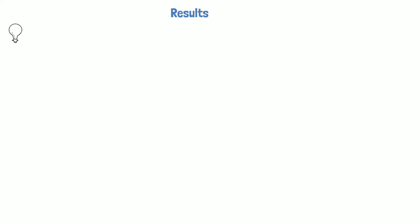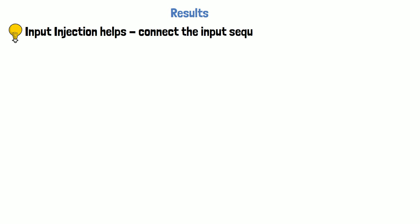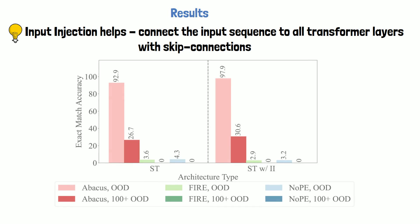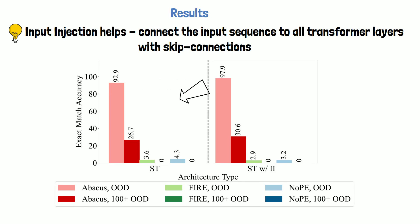Another interesting result from the paper shows that input injection helps. By input injection, the meaning is that the input sequence is injected with skip connections to any layer of the transformer. On the left we can see results for a standard transformer, where the transformer with abacus embeddings is shown in pink and red. Both reported results are out-of-distribution, meaning for larger numbers than those in training, and the darker red represents numbers with more than 100 digits. On the right we see the results when also adding input injection, which improves results nicely for abacus embeddings, from 92.9 to 97.9.